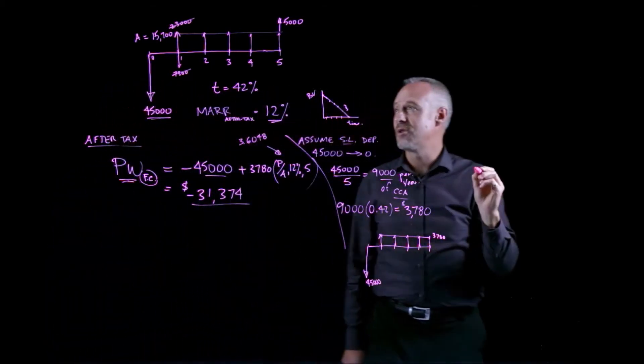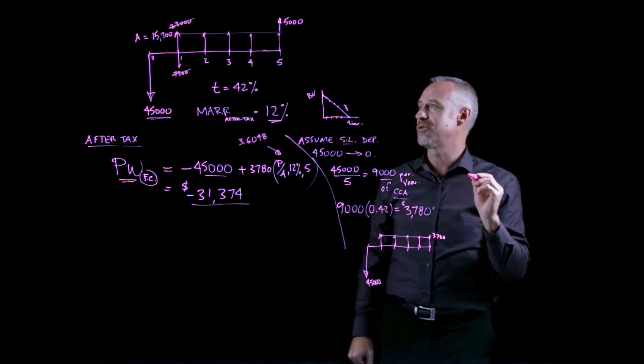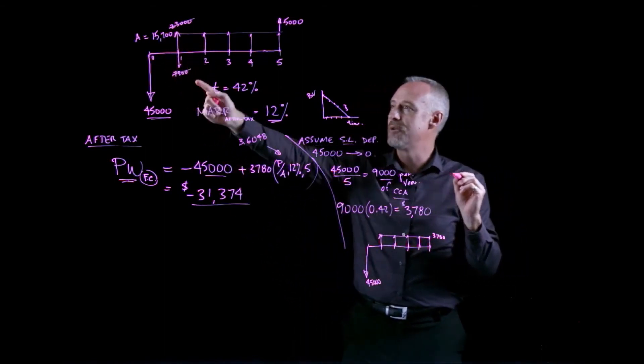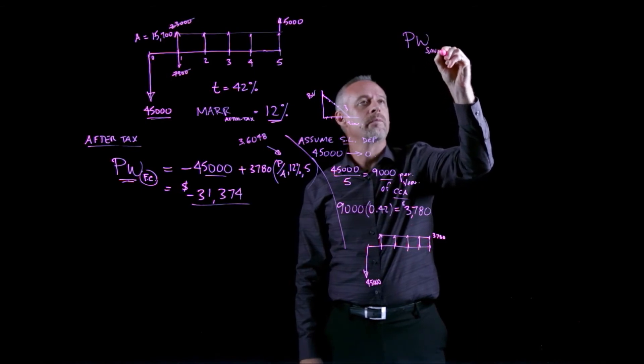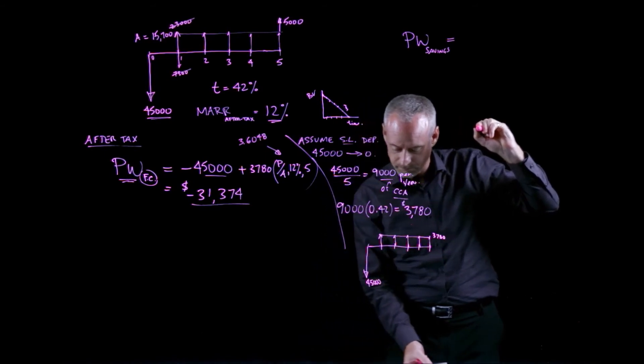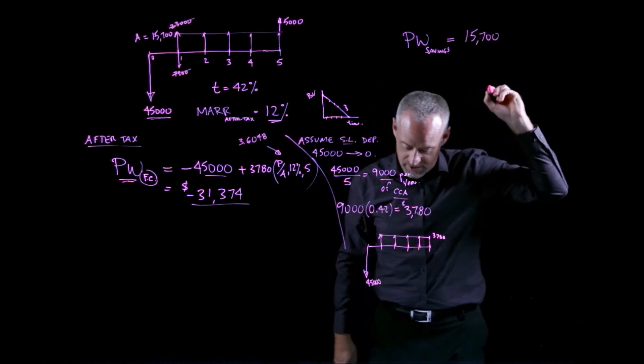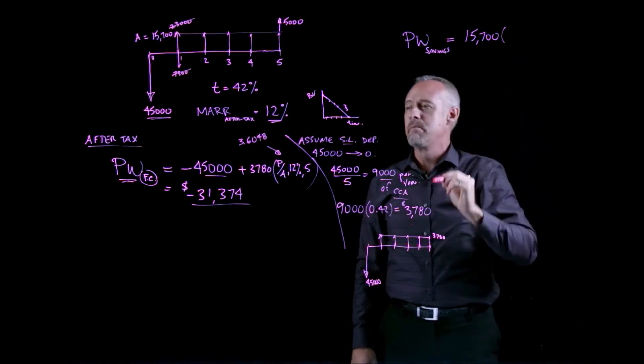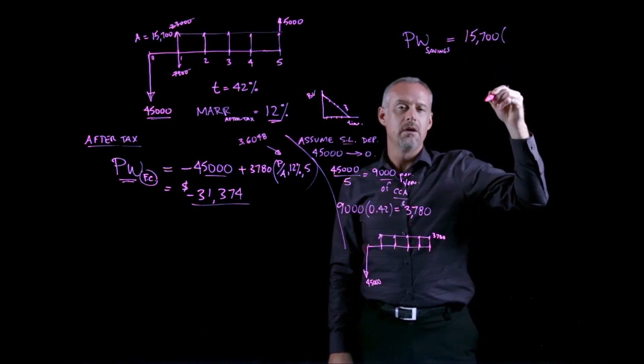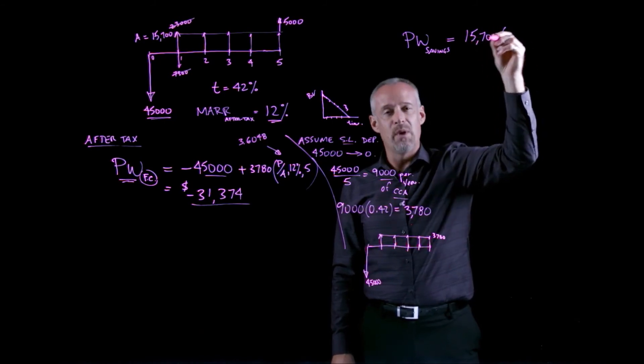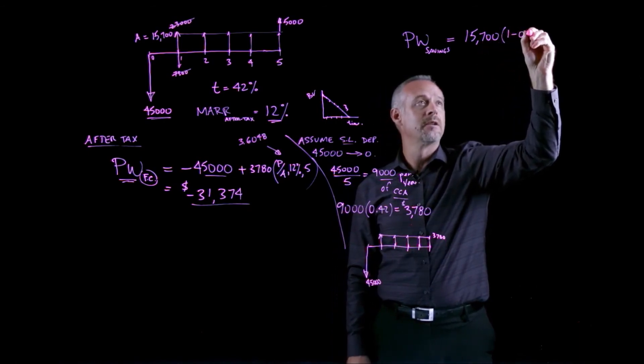I'll come over here and deal with the after-tax present worth of the net savings that occurs. So the cash flows, the net cash flow of $15,700 as an annuity after tax, well, that's going to look like this. I'll call it the present worth of the savings is going to be equal to, we're going to use the net number here, so really we have $15,700 times, and remember the way that this cash flow will appear on our income statement. This is the before-tax cash flow. I'll need to pay tax on this amount, so to convert this amount to my after-tax cash flow, I multiply by 1 minus the tax rate.